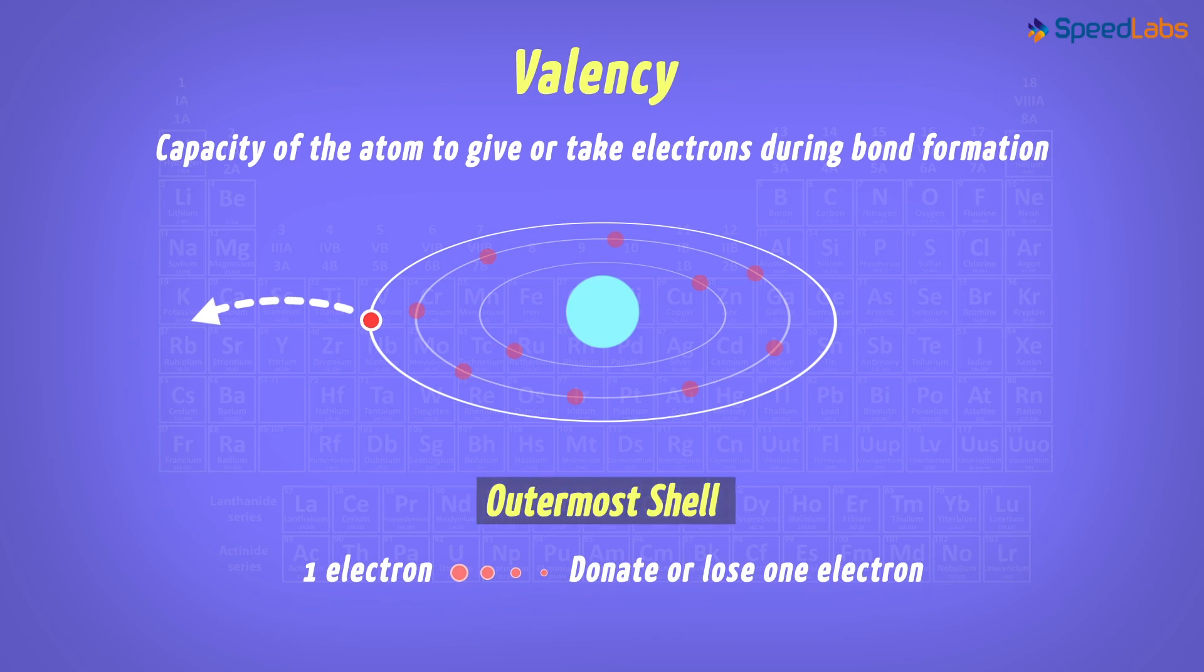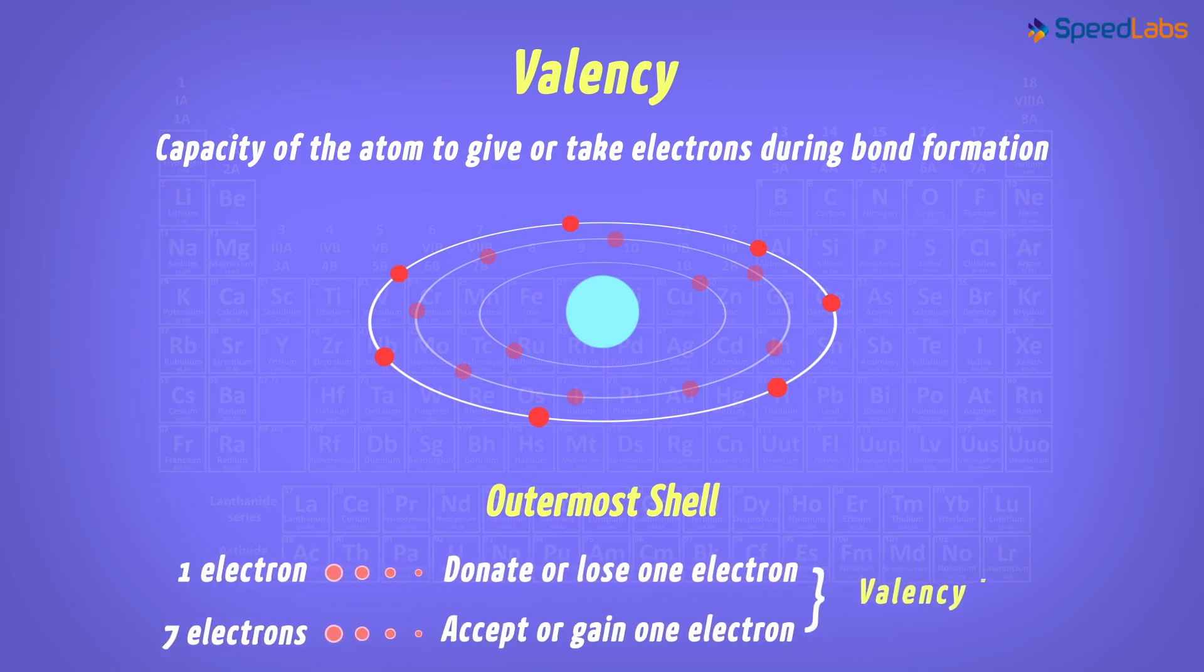And what if an atom has seven electrons in the outermost orbit? It would have a tendency to accept or gain an electron from outside. The valency of both will be one here, because the first atom can donate one electron and the second one can accept one electron.